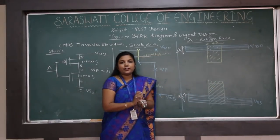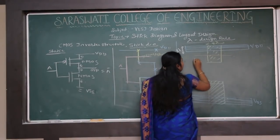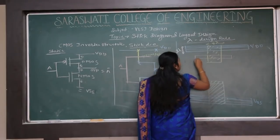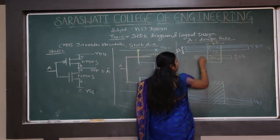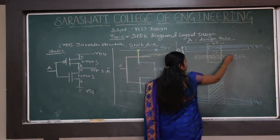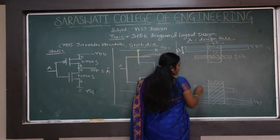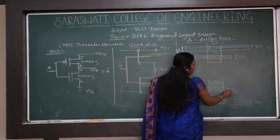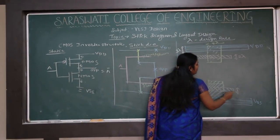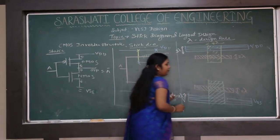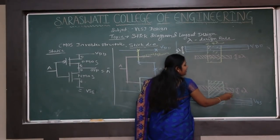Now we need polysilicon to cut through both diffusion areas. Using a polysilicon width of 2 lambda, drawn with a second-side slant, cutting through both areas gives us two gates — one for PMOS and one for NMOS. Make sure the distance of separation between these two gates is greater than 2 lambda.